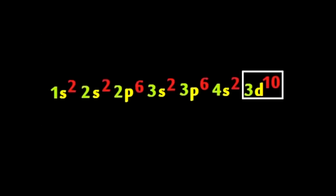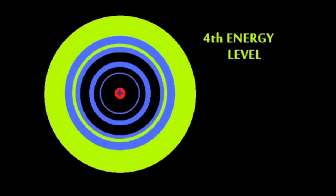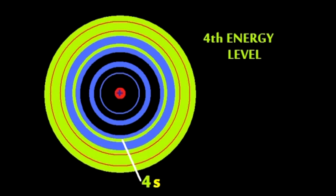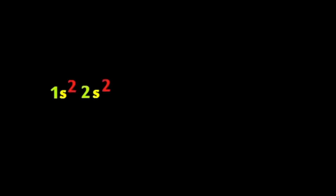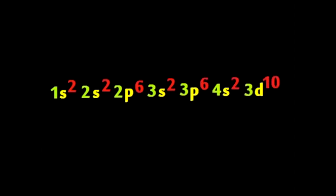Why does 4s fill up before 3d? Because the fourth shell is enormous. Overlap, 4s is lower in energy than supposedly lower 3d. 1s², 2s², 2p⁶, 3s², 3p⁶, 4s², 3d¹⁰.